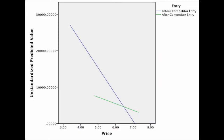So what we see here is price on the x-axis, our predicted sales on the y-axis. The blue line represents the relationship between price and sales prior to competitor entry. And the green line represents the relationship between price and sales following competitor entry. And so we see, first of all, just a general negative relationship, such that as price goes up, sales go down.